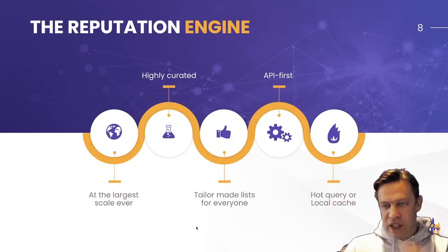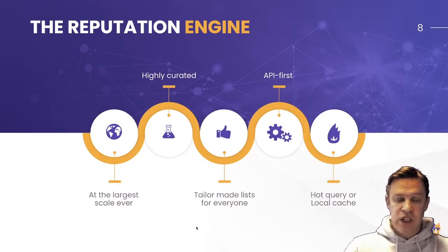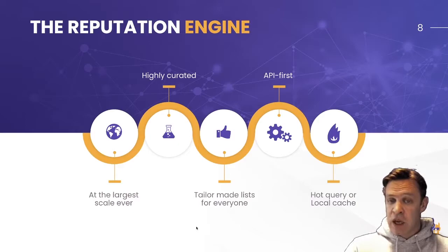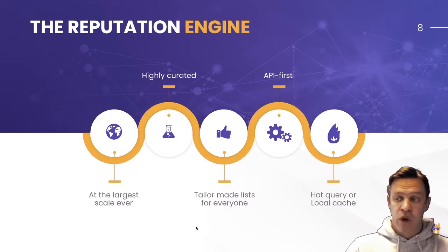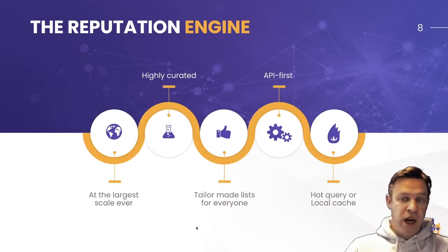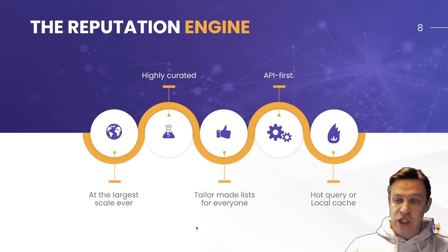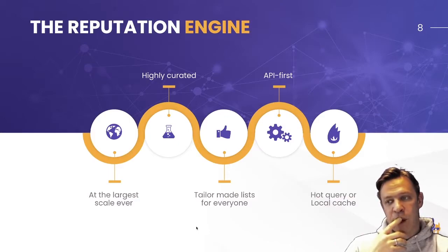The reputation engine is the second engine in CrowdSec. It's based on all the sharing and sightings we do together. So far we know it's at the largest scale ever — most likely the biggest IP blocklist on earth. We are thousands of users and aim to be hundreds of thousands, if not millions. The list of IPs you receive is tailor-made for your needs, because we found out in our data lake that IPs doing SSH brute force are not the same as those doing terminal server brute force or VPN brute force. It's API-first, so you can query the API and integrate it anywhere in your information system. You can also use a hot query system or keep a local cache — we don't mind, since the value lies in the network's capability to generate the list.